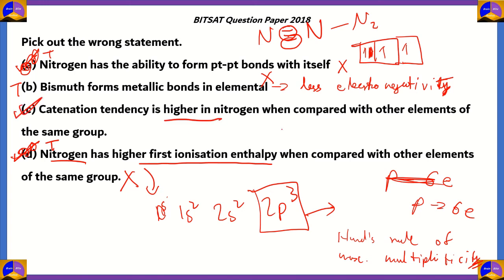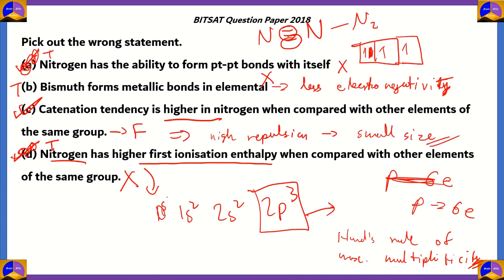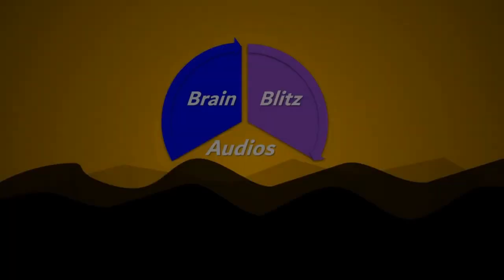The correct answer is option C. The statement that catenation tendency is higher in nitrogen compared to other elements of the same group is false. The reason is that nitrogen has high repulsion among its electrons due to its small size, so catenation tendency in nitrogen is actually quite low. Option C is the false statement, which is what we needed to find.